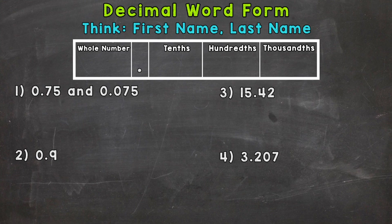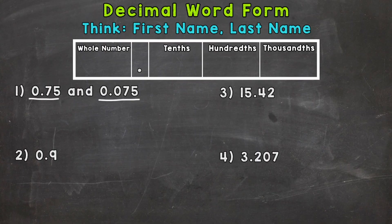Next, we're going to move to word form. When it comes to decimal word form, it's very important to think first name, last name. We use that same thought process when we wrote whole numbers in word form. It's going to look a little different when it comes to decimals. We have two examples here that may look very similar, but they're actually going to be different as far as the word form goes. They are not the same.